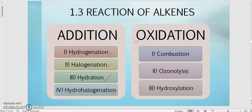For hydrogenation, 'hydro' means hydrogen, 'nation' means penambahan — so meaning that you add H2. For halogenation, it is halogens, so plus X2 — it doesn't matter whether it is Br or Cl. And next, hydration means tambah water. For hydrohalogenation, 'hydro' is hydrogen and 'halogenation' is halogens, so tambah H with X, where X boleh jadi Br or Cl.